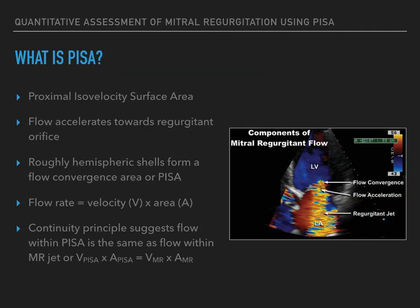The proximal isovelocity surface area method of assessing the severity of mitral regurgitation is based on two principles. Firstly, flow dynamics. As a regurgitant jet moves towards a regurgitant orifice, the flow accelerates. This flow occurs along a series of concentric, roughly hemispheric shells with a regurgitant orifice at the centre. This is the flow convergence area, or PISA.